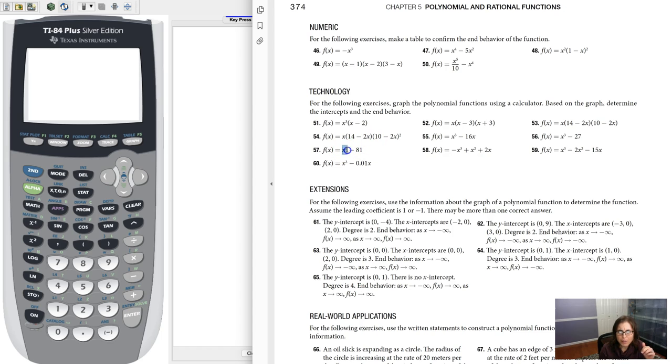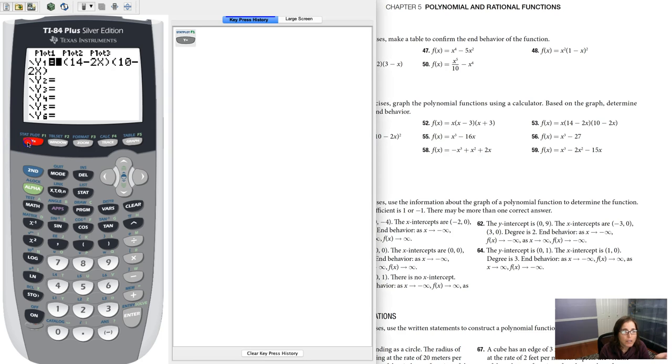And in terms of the end behavior, well, our leading term is x to the fourth, so that would be both ends up. So as I head left, I go up, and as I head right, I go up. Alright, but that's just my gut feelings as I look at this. Let's go confirm it on our calculator.